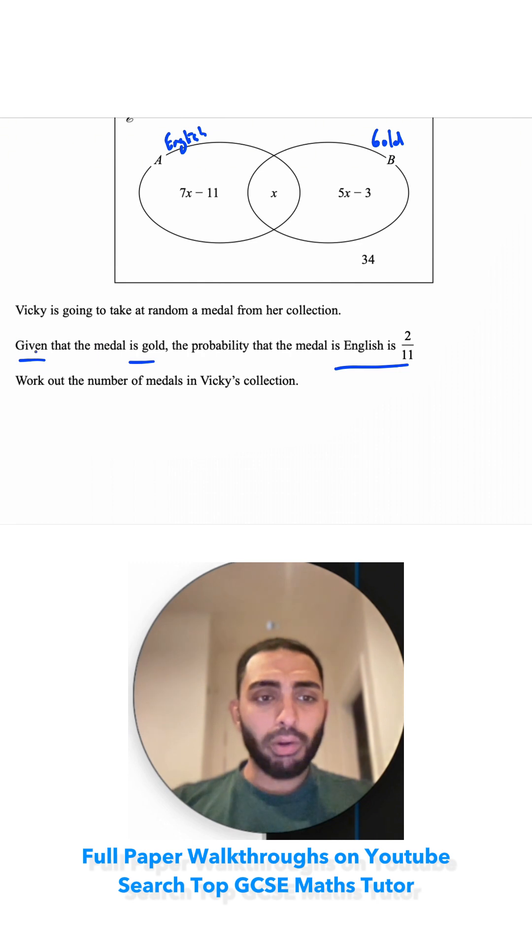So this part is the important part. Given that the medal is gold, it tells me that my denominator is going to be all of the gold ones, so all of this section. So 5x minus 3 plus x would be equal to 6x minus 3.